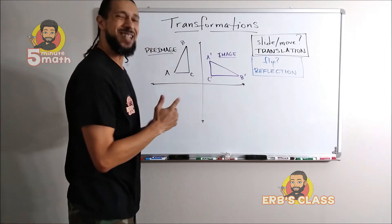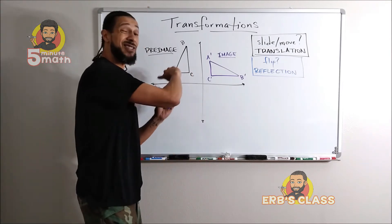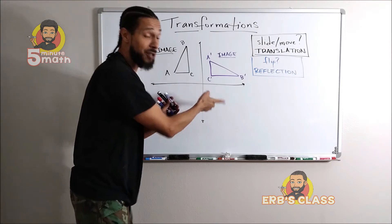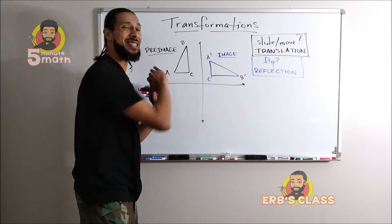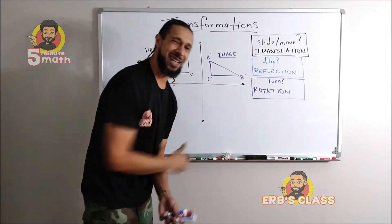So this is yet another way we can transform a shape in geometry: we can turn the shape. Now we can turn it clockwise or counterclockwise, but it's still being turned. And the official name for that is a rotation.